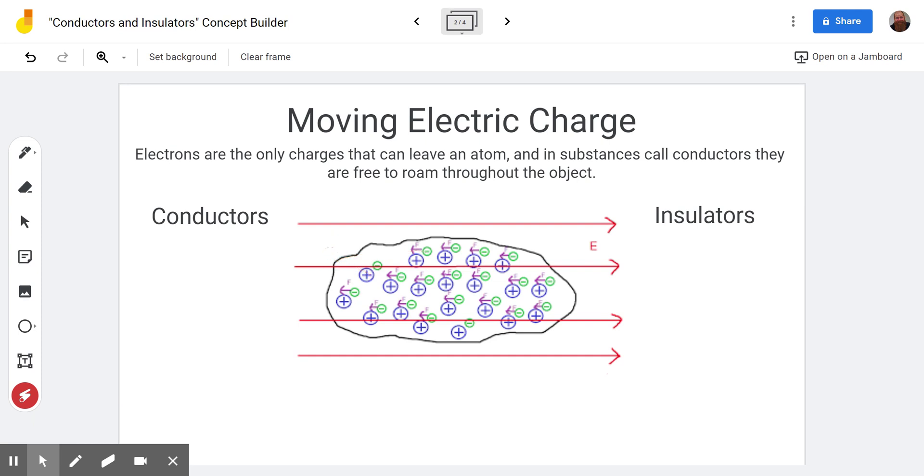It might come off this atom and go to this atom, but while this one loses its electron to that one, there's a whole cascading effect of the electrons flowing through this substance. So when that happens, that is a conductor.